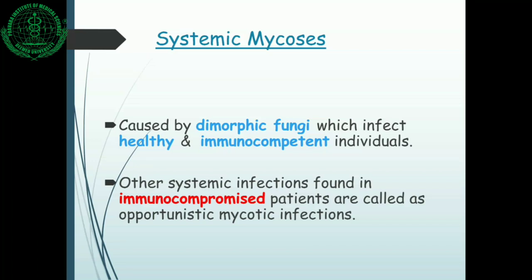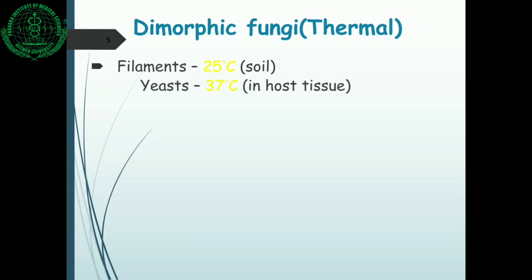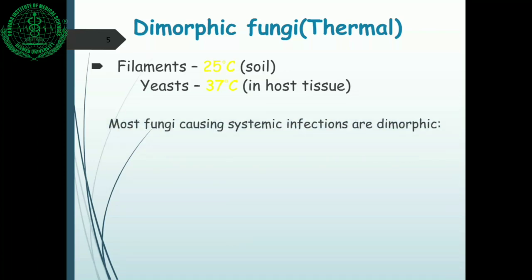Other systemic infections can be seen in immunocompromised patients and are called opportunistic mycotic infections, which will be covered in a separate lecture. Dimorphic fungi are fungi that exist in two forms: filaments as well as the yeast form. Generally, at 25 degrees centigrade in soil they exist as filaments, and at 37 degrees centigrade in host tissue they exist as yeast cells.